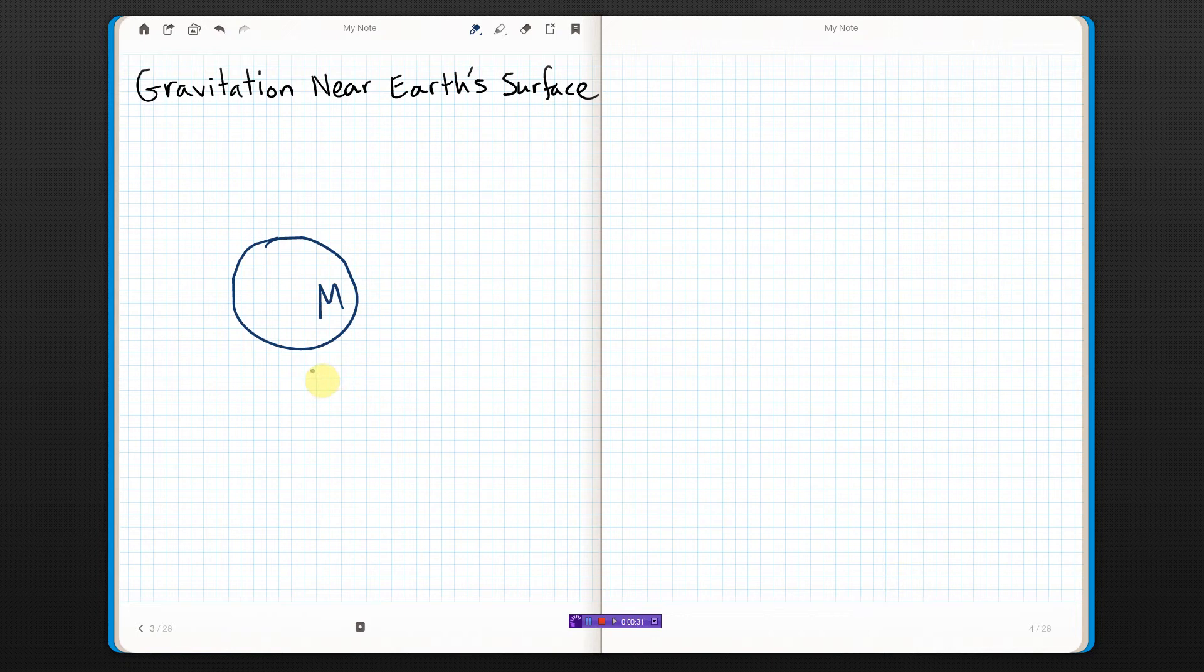Let's say that the magnitude of the gravitational force from Earth on a particle of mass m, little m, so we're going to have another particle near Earth's surface of mass little m.